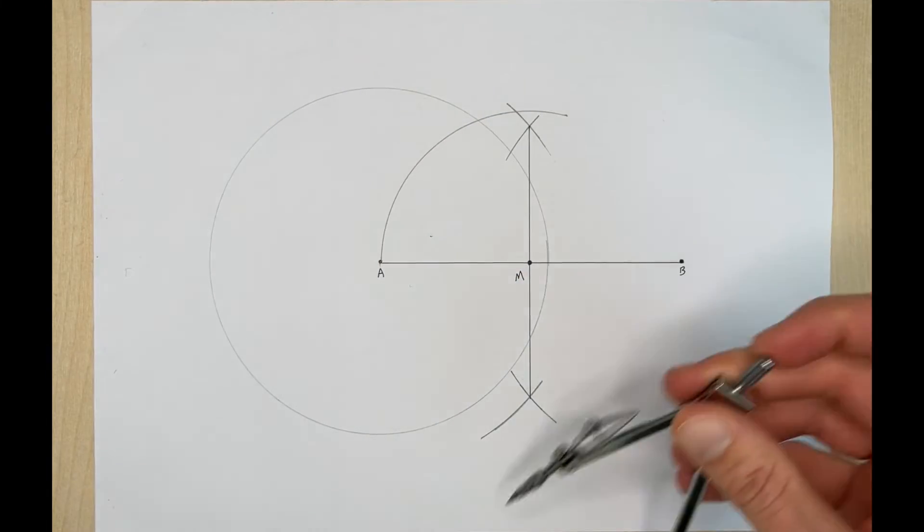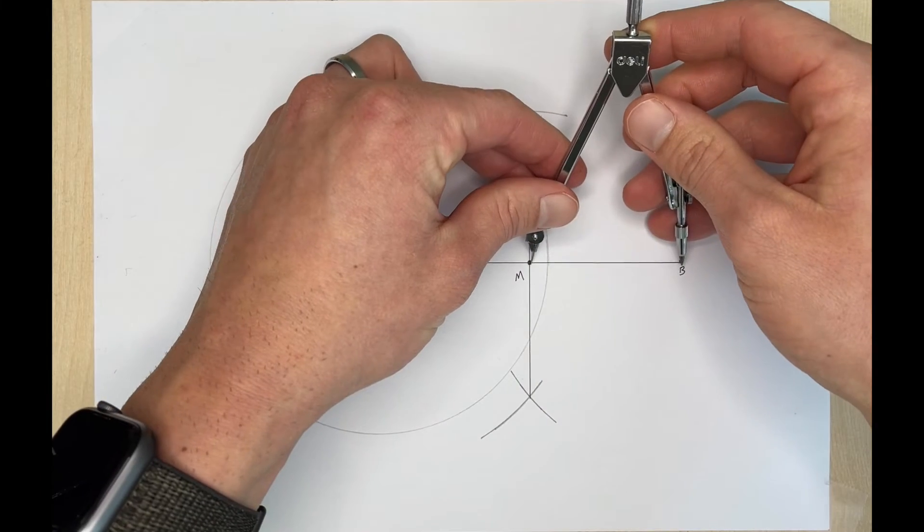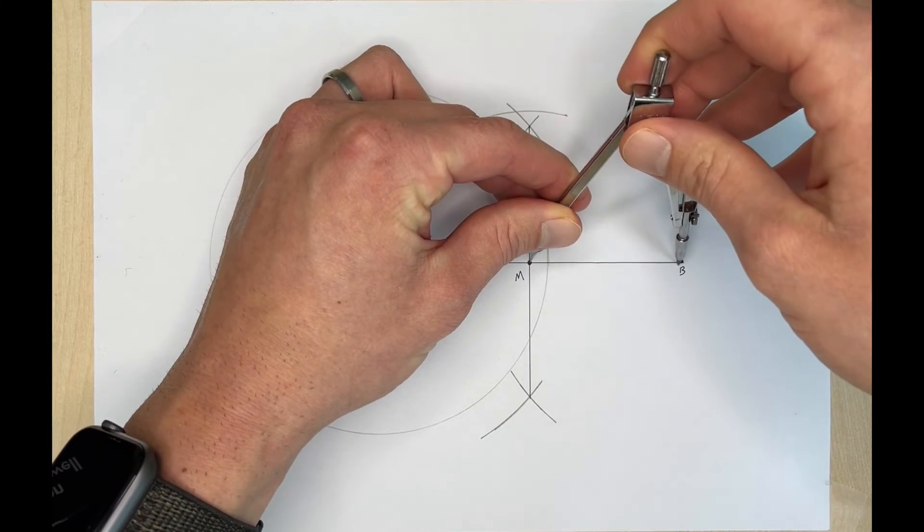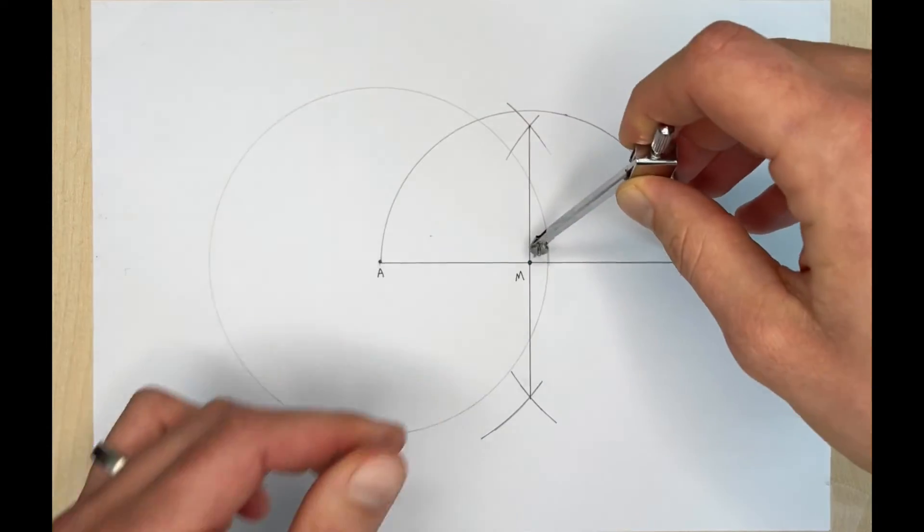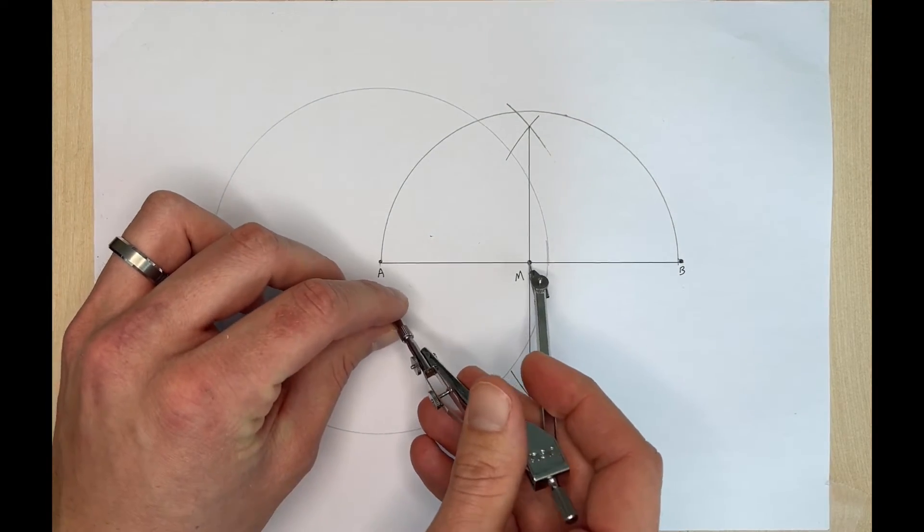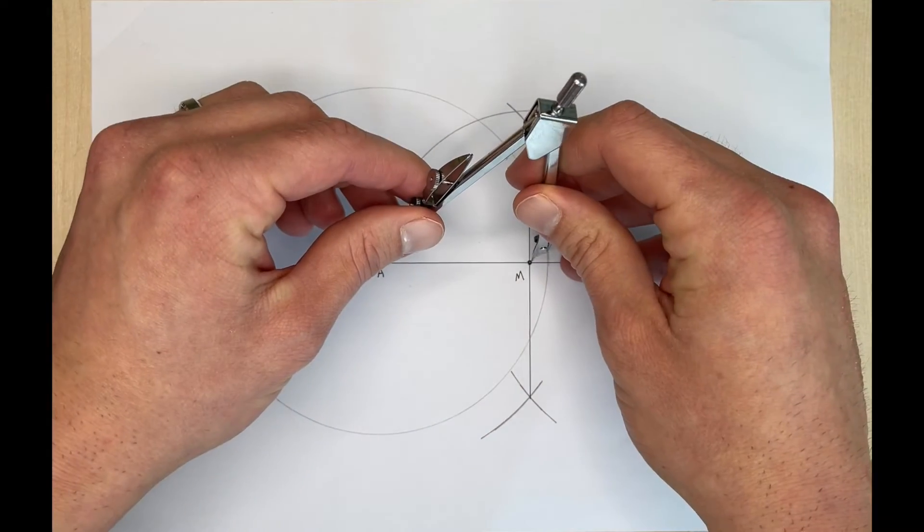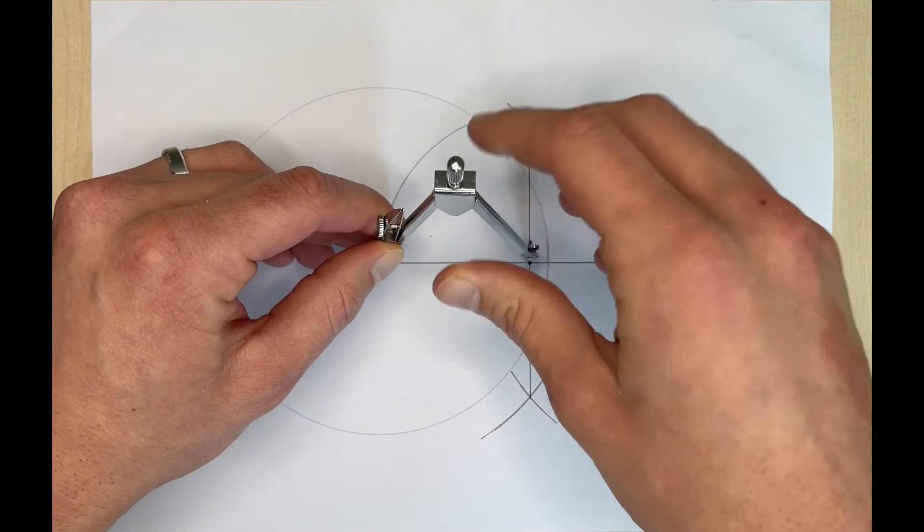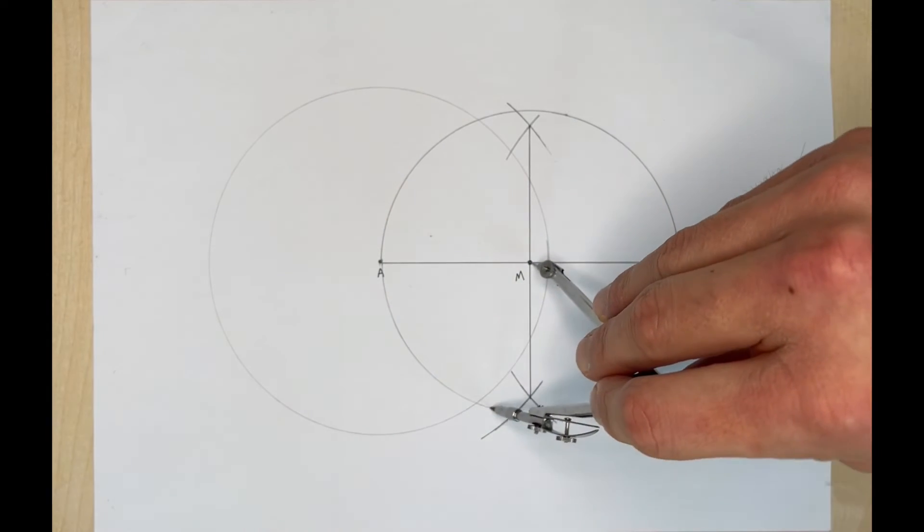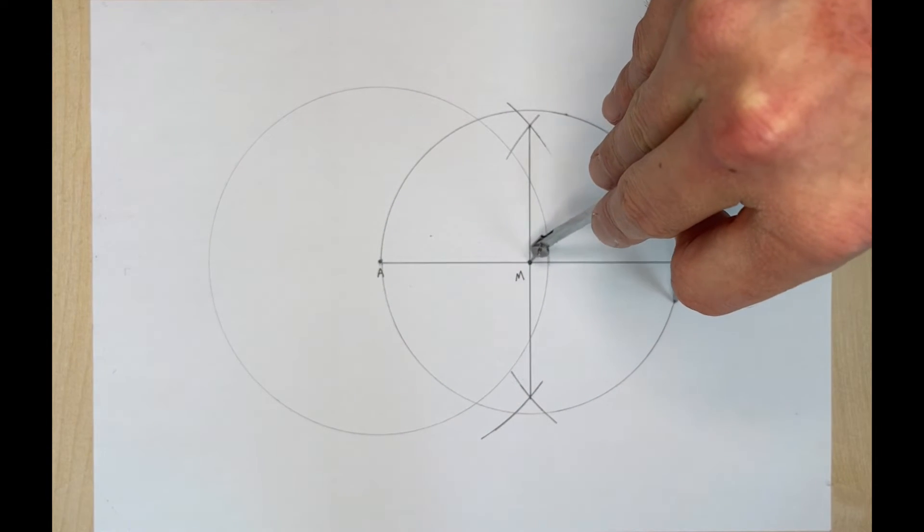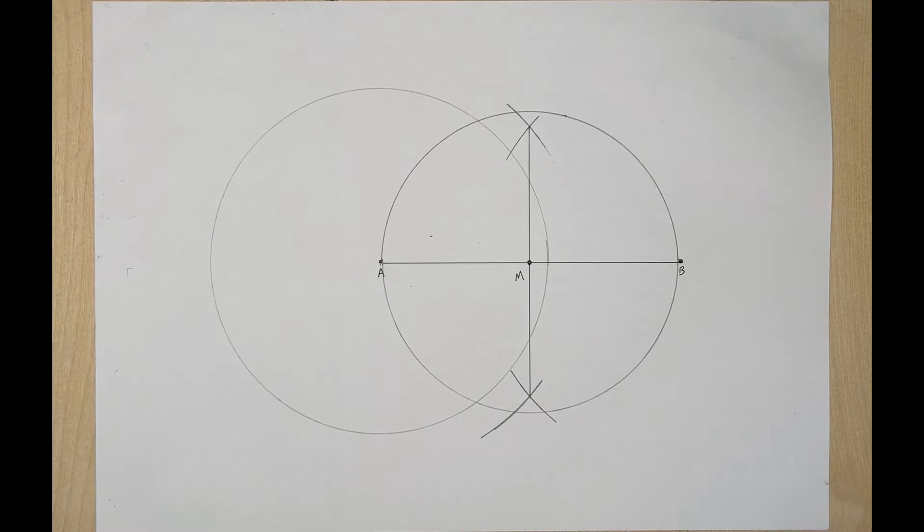So I'll draw there, we'll come over here and draw this half. Bring it back down here and we'll finish our circle going the other way. Perfect and now we have our circle.